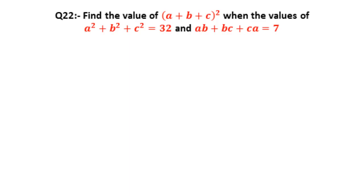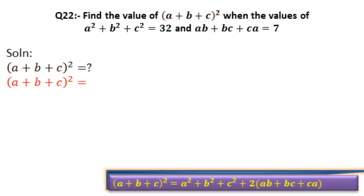Now, we are going to solve this question step by step. Let's see its solution. We have to find A plus B plus C whole square. We have taken A plus B plus C whole square.